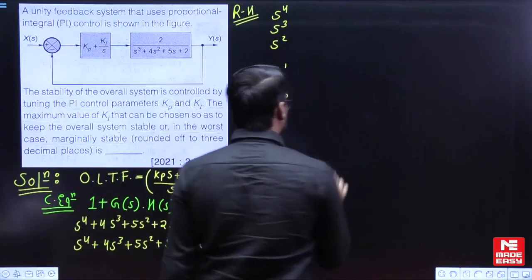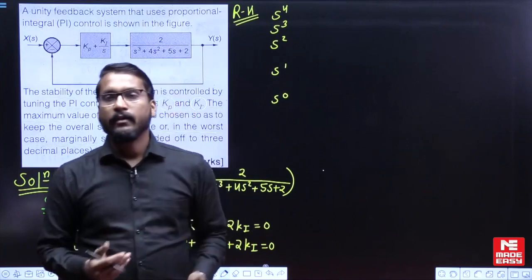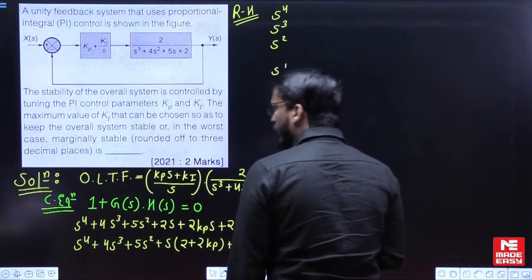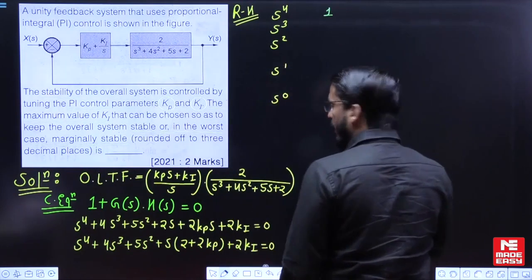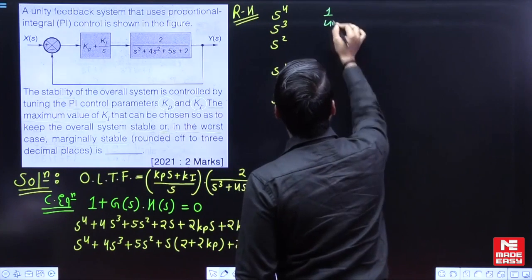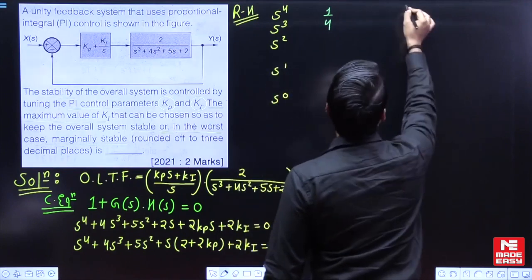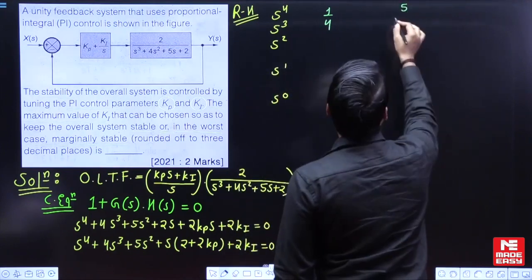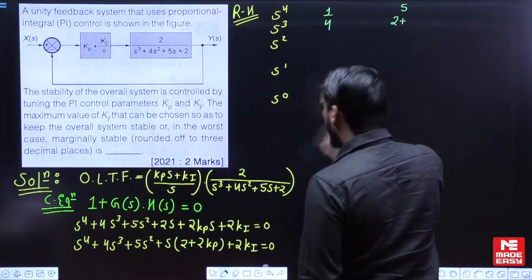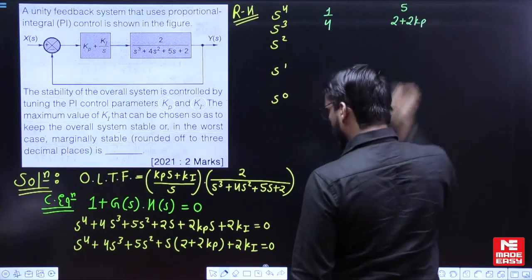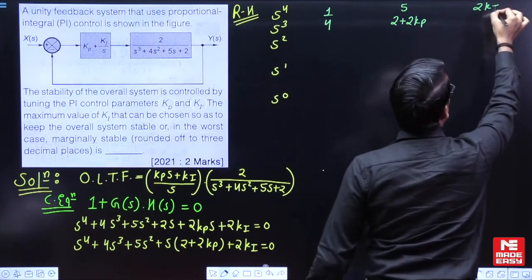I expect that you all know how to write the RH table. With respect to that, the elements are: for s⁴ row: 1, 5, 2KI; for s³ row: 4, (2 + 2KP), 0; and 2KI appears in the s⁰ position.